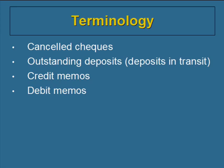Debit memos are changes that decrease the company's bank account. Examples include an NSF check — a check written by a customer who didn't have sufficient funds — as well as printing of new checks, service charges, interest charges, and loan payments.